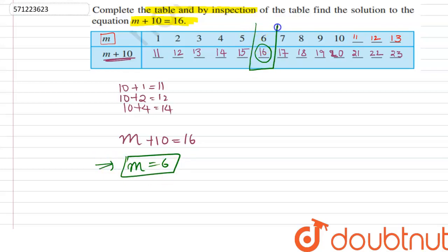Therefore, by inspection, we can say that m + 10 = 16 means m = 6. That is our answer. Hope you understand. Thank you.